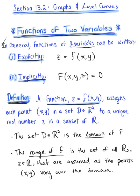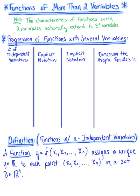What's nice here is that this definition and the implicit and explicit notation naturally extends into higher dimensional space. So let's go ahead now and look at functions of n independent variables — functions of more than two variables. The characteristics of functions with two variables that we just looked at are going to naturally extend to three or more variables.